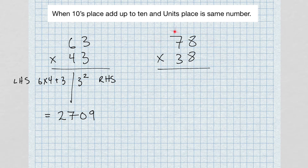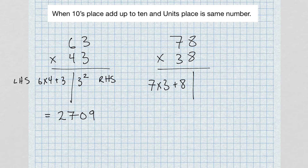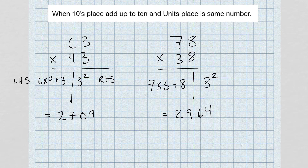The next problem is 78 times 38. Same process: left-hand side, seven times three plus eight; right-hand side, eight squared. Seven times three gives us 21; 21 plus 8 gives us 29. Eight squared is 64. So our answer is 2964 — you get the answer very fast using this method.